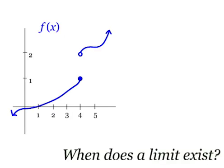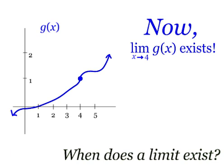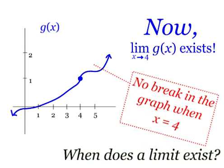Now, let's change this function just a little bit. This new function, we'll call g of x, does possess a limit. Can you see why that's the case? It's because the function no longer has a break at 4.